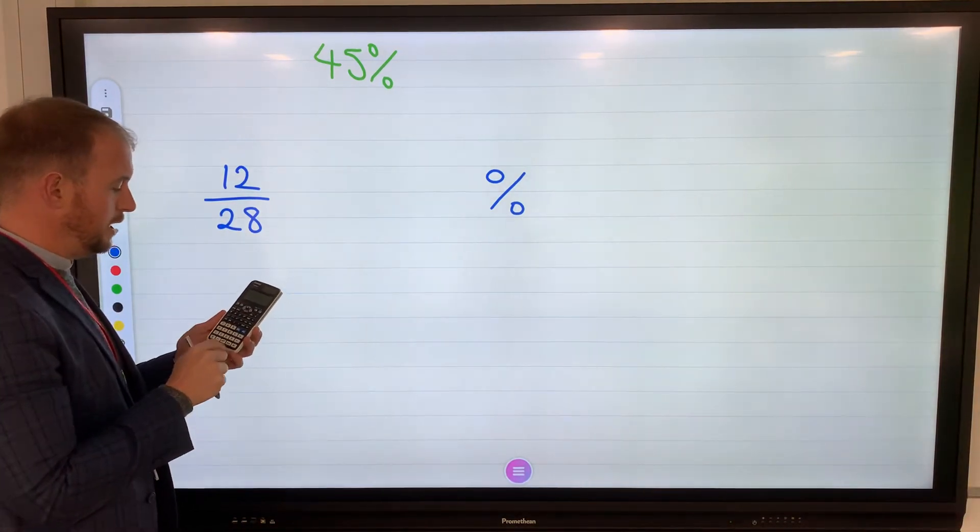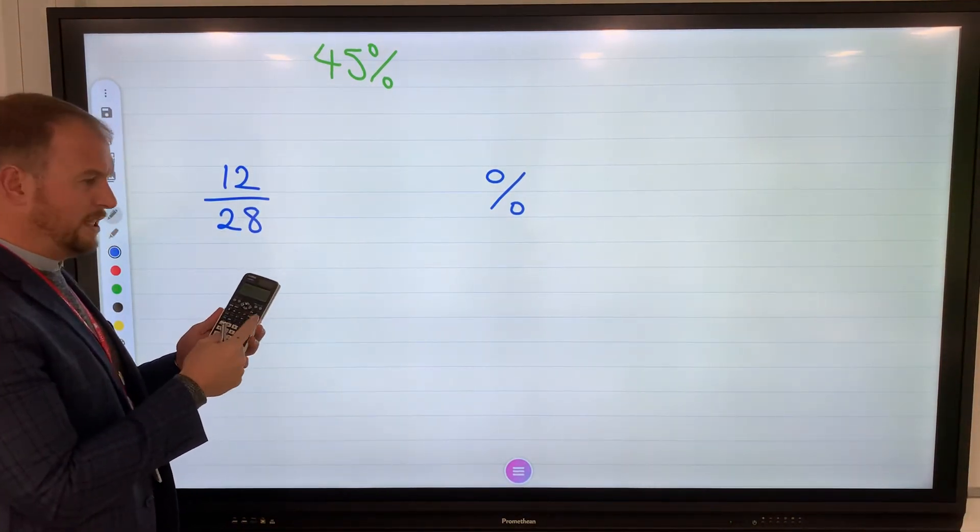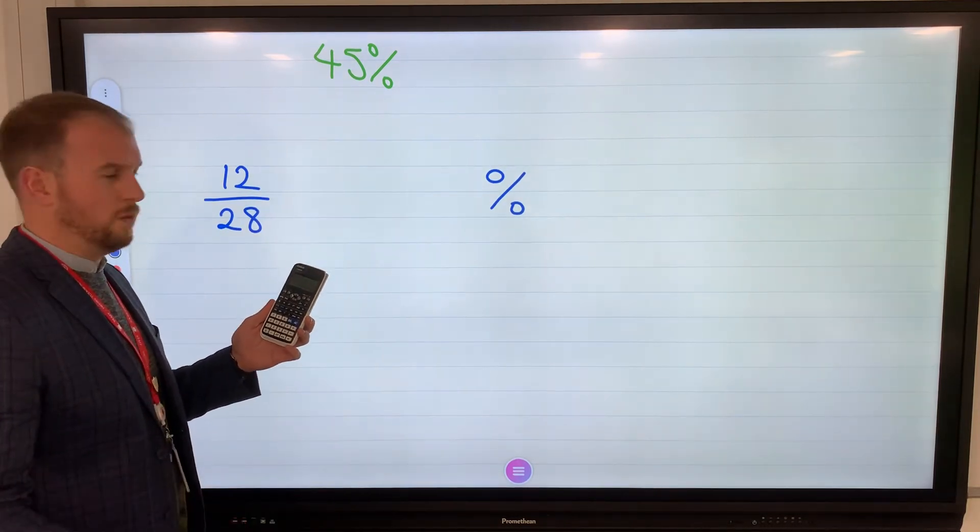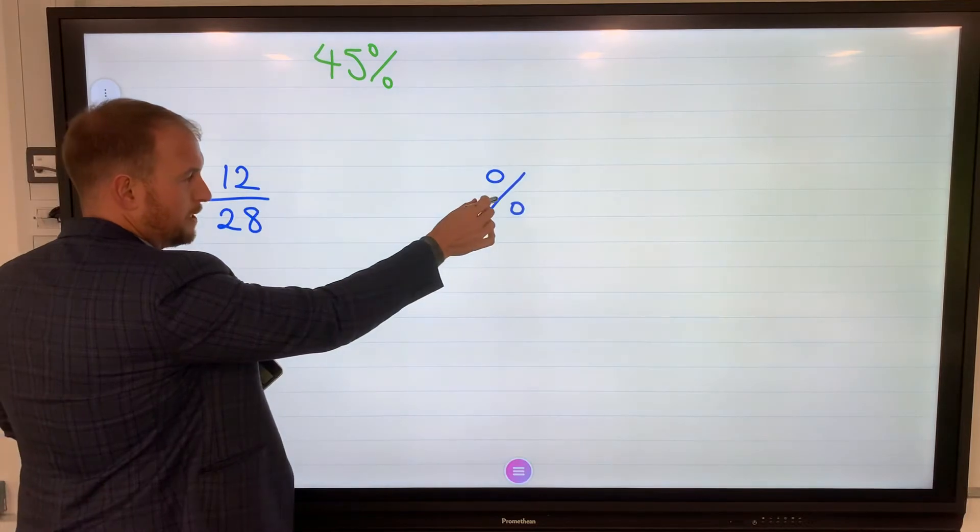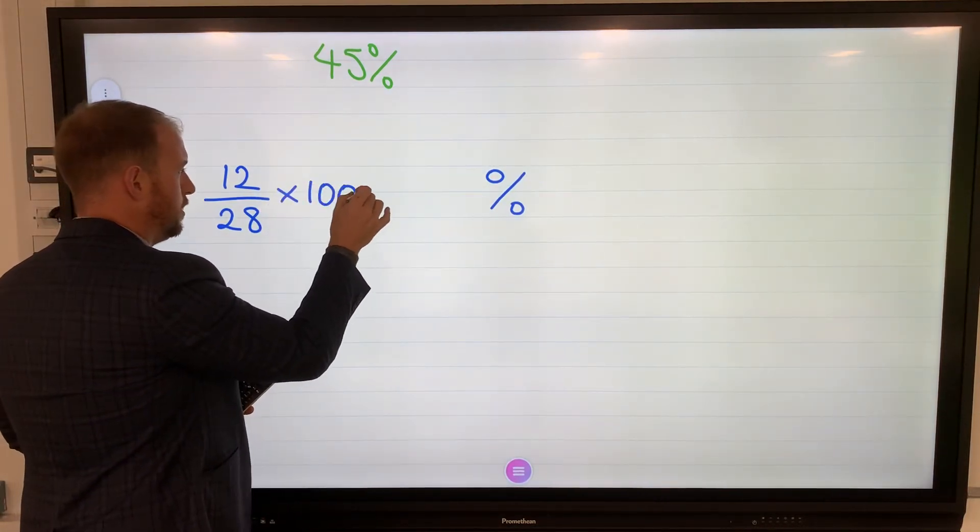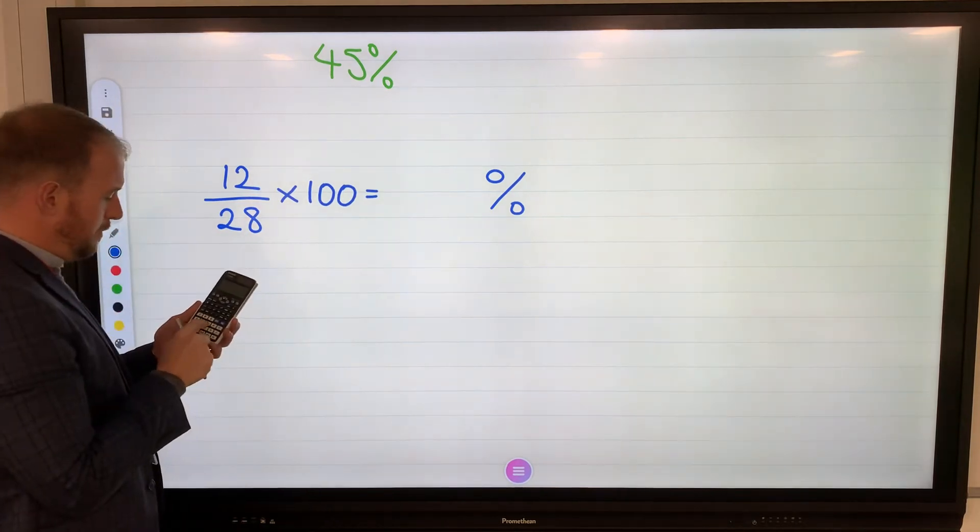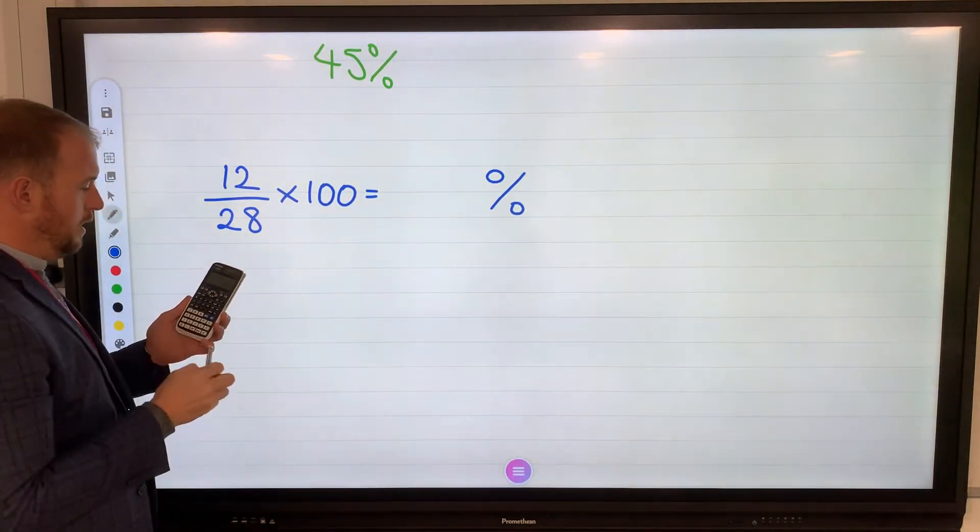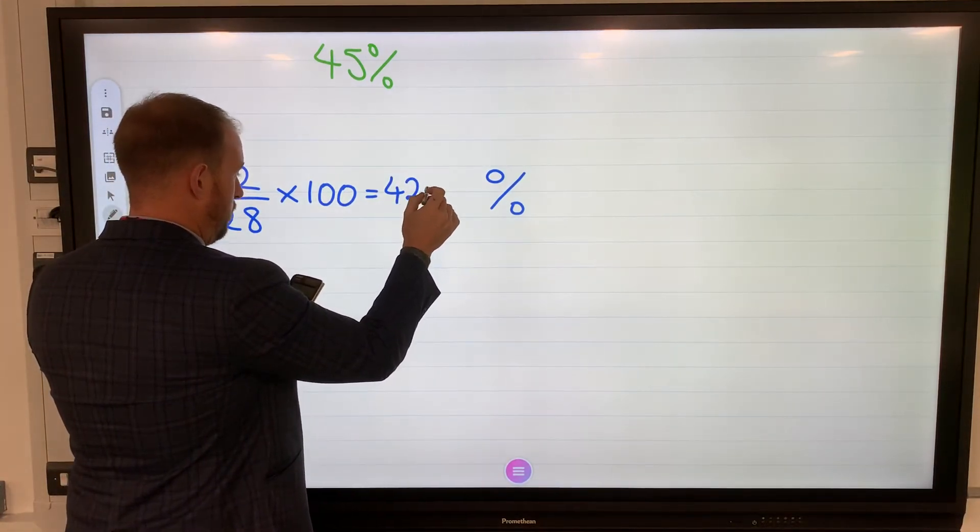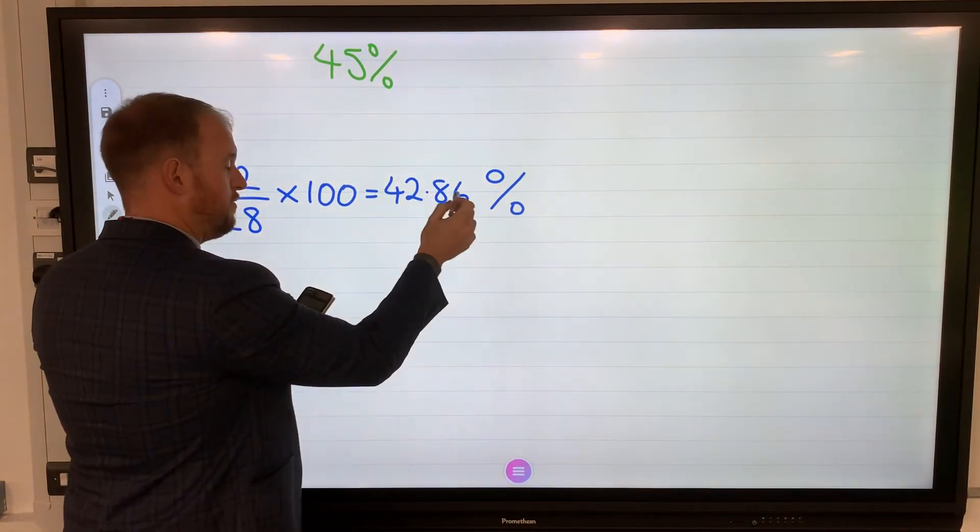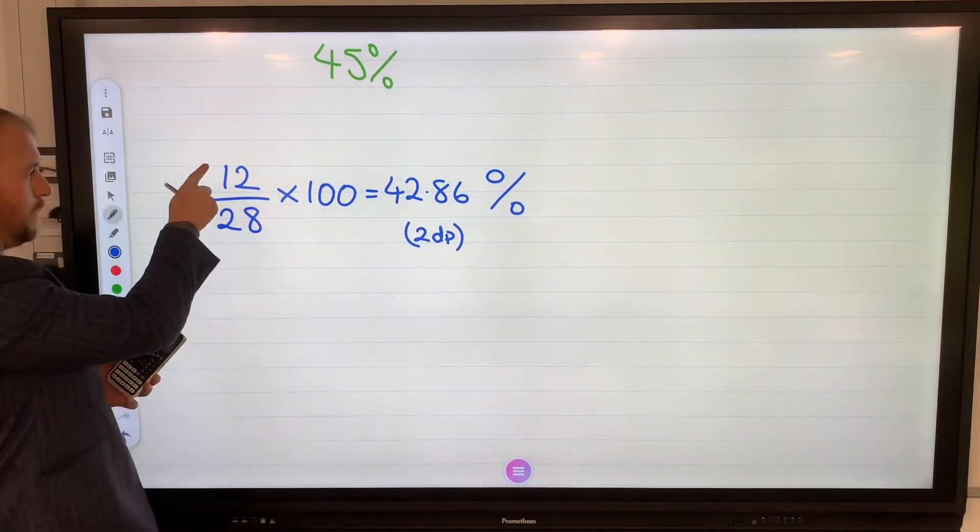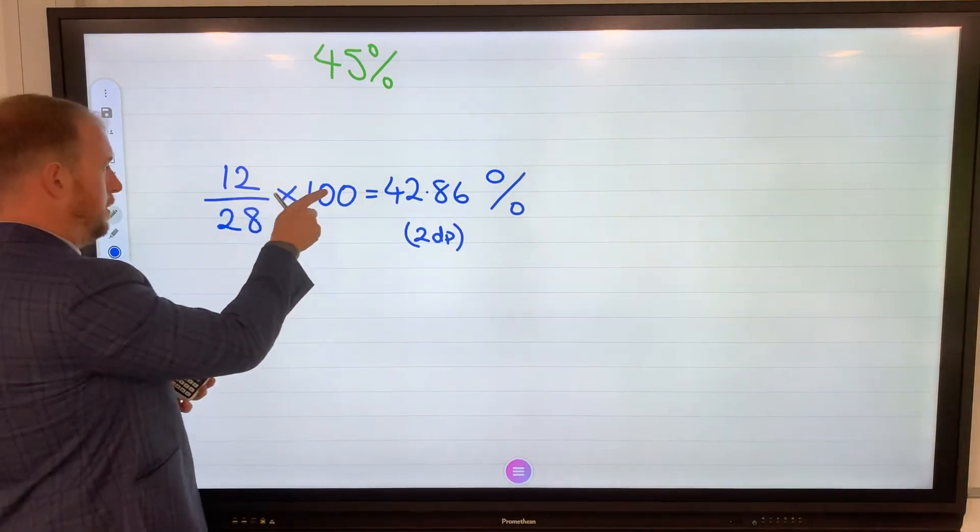So 12 divided by 28, we've got 0.428571. To convert that to a percentage, I need to multiply by 100. Times that by 100 equals 42.86. I've rounded that to two decimal places. So 12 out of 28 multiplied by 100.